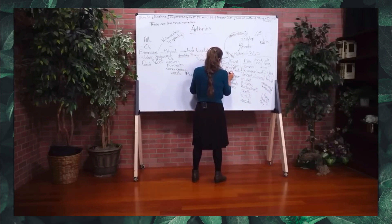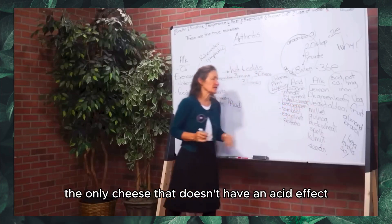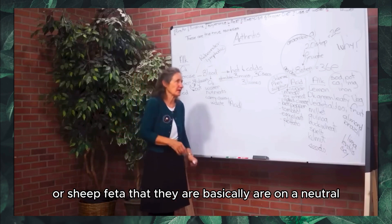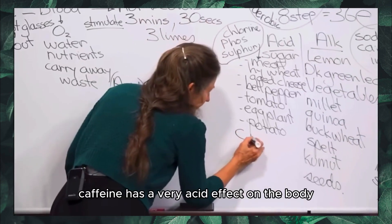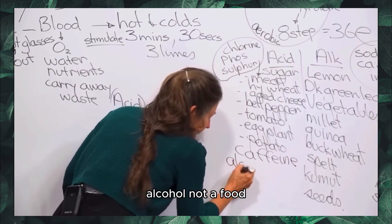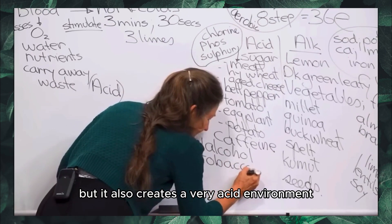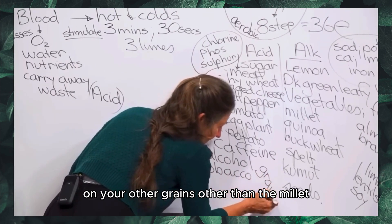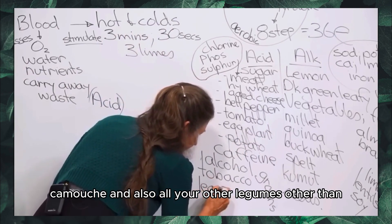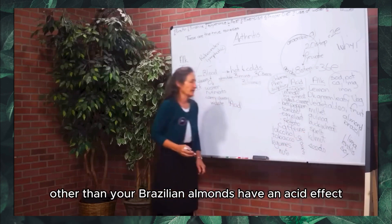Aged cheese is very acid-forming. The only cheese without an acid effect would be goat feta or sheep feta, which are basically neutral. Caffeine has a very acid effect on the body. Alcohol, though not a food, creates an acid environment. Tobacco also creates a very acid environment. All grains other than millet, quinoa, buckwheat, spelt, and kamut are acid-forming, as are all legumes other than lima beans, lentils, and soy, and all nuts other than Brazil nuts and almonds.